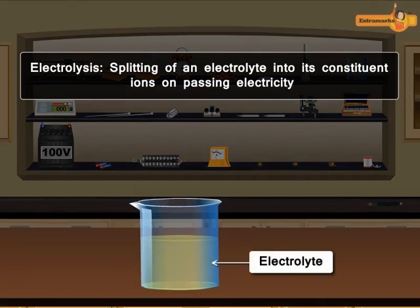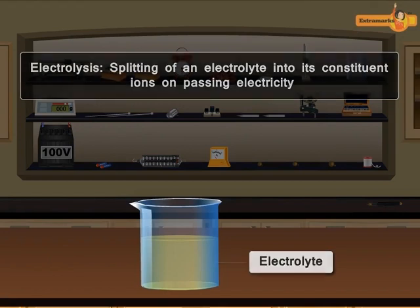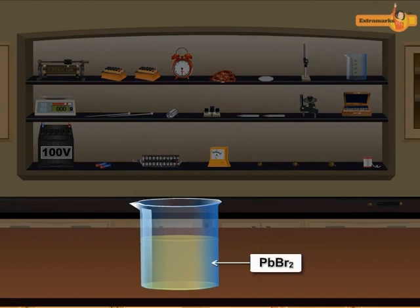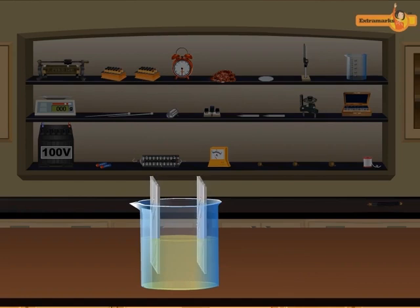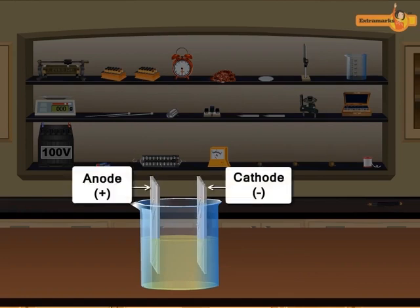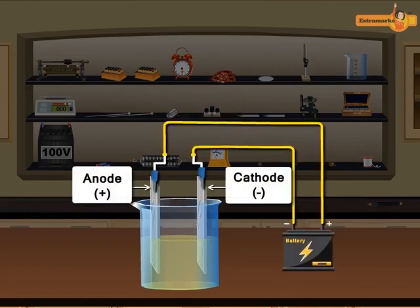The splitting of an electrolyte into its constituent ions on passing electricity is called electrolysis. To study the electrolysis of molten lead bromide, we immerse two electrodes in the lead bromide solution which gets dissociated into lead and bromide ions.